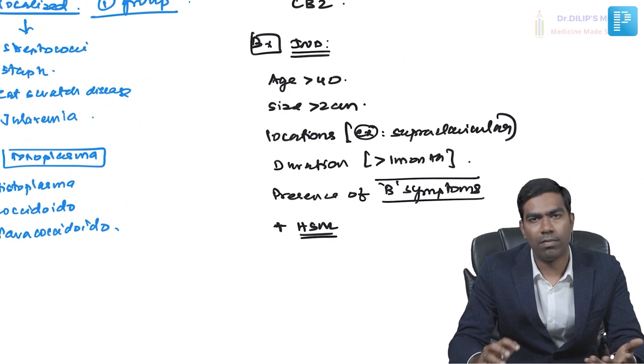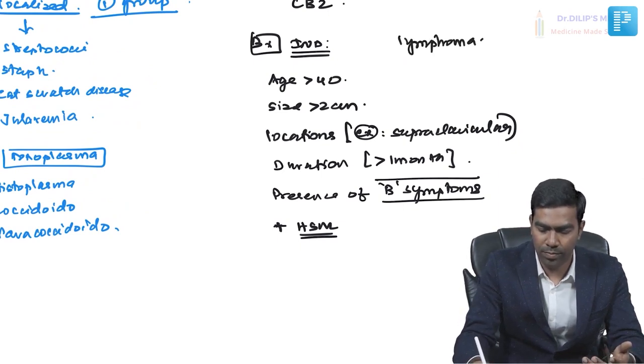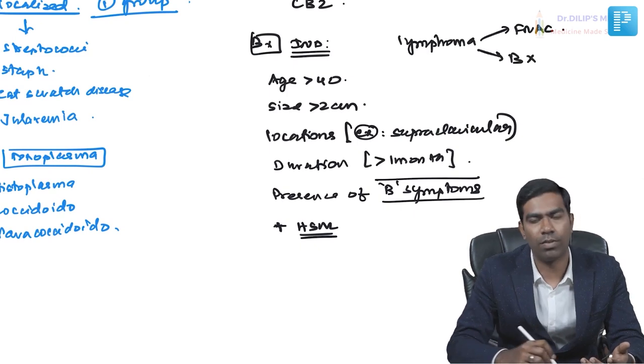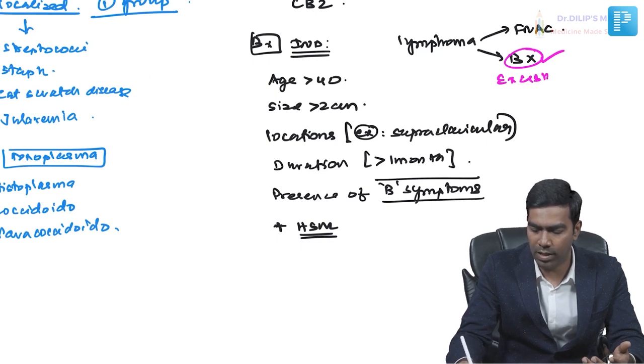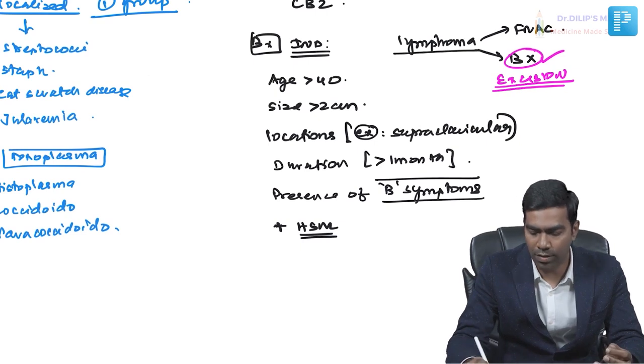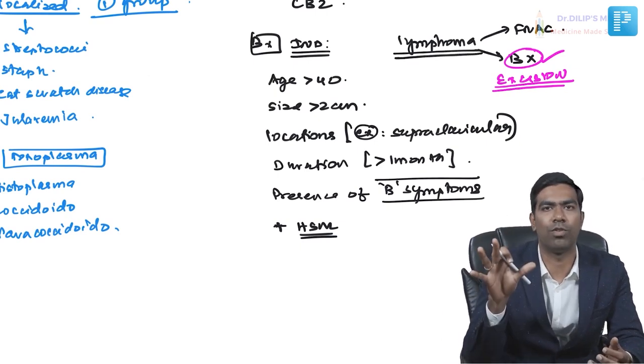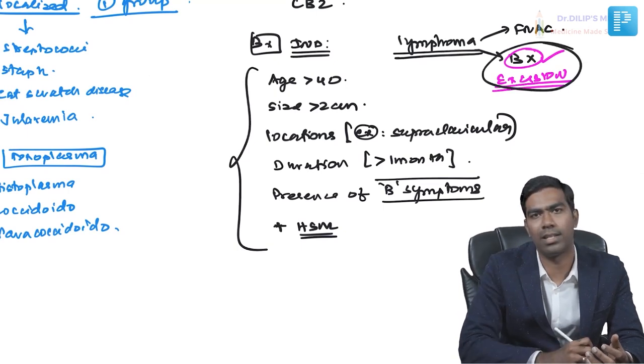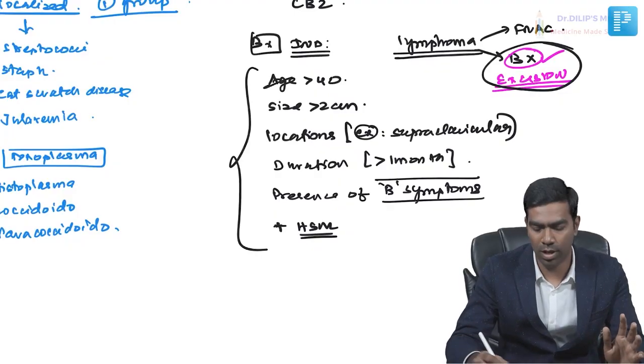When diagnosing a lymphoma, should you do FNAC or biopsy? The answer is always biopsy — specifically excision biopsy. FNAC cannot conclusively diagnose lymphoma because you need to understand the architecture of the lymph node and examine the cells properly. So whenever features are predictive of a lymphoma, always go for excision biopsy rather than FNAC.